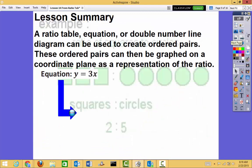So here's our lesson summary. It's a really short lesson today. A ratio table, equation, or double number line can be used to create ordered pairs. These ordered pairs can then be graphed on the coordinate plane as a representation of the ratio. So several ways to do that. In our example, we start out with the ratio table. And then we went to an equation followed by a double number line. We can start with any of those and recreate them all at once.